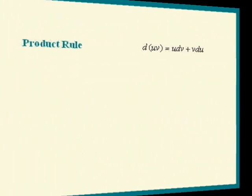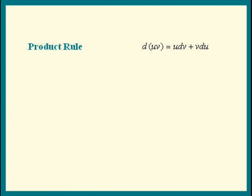Let's first derive the formula. In case you ever forget it, you can derive it yourself. Here's the product rule for differentiation written in differential format. To differentiate a product, you copy the first factor and differentiate the second, then copy the second and differentiate the first.